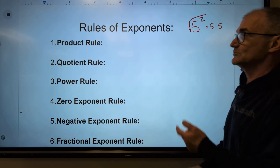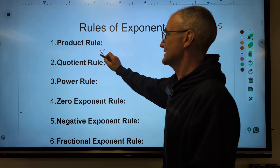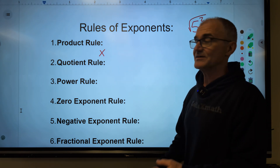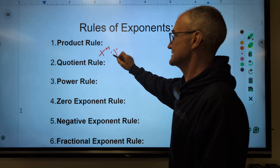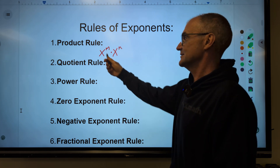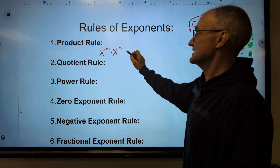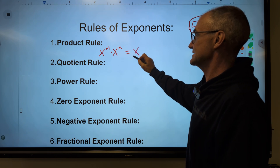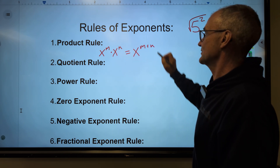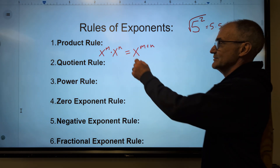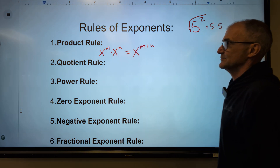The product rule — product means to multiply. I have to have the same bases. If I have x to the m times x to the n, the bases are the same and the exponents are different. That is going to be equal to that same base, and then I add those exponents. So if the bases are the same and you're multiplying, you add the exponents.